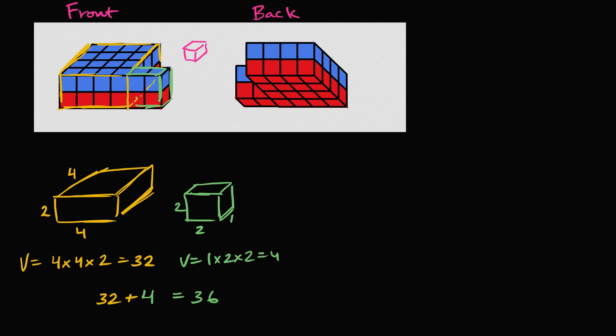So you literally could just count. You just have to go one, two, three, four, five, six, seven, eight, nine, 10, 11, 12, 13, 14, 15, 16, 17, 18.